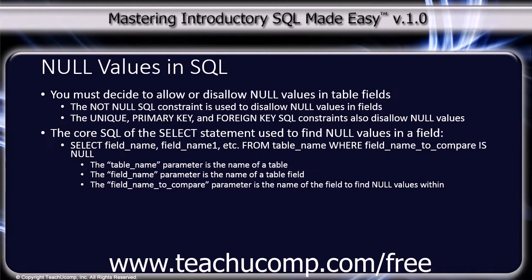The core SQL of a simple SELECT statement is shown on screen. In this example, table name is the name of the table, field name is the name of the fields to display in the query, and the field name to compare parameter is the name of the field within which you want to search for null values or find values that are not null. This example shows the core SQL used to find null values within a field: SELECT field name, field name 1 — basically the fields you want to see within the query result set — FROM table name WHERE field name IS NULL.